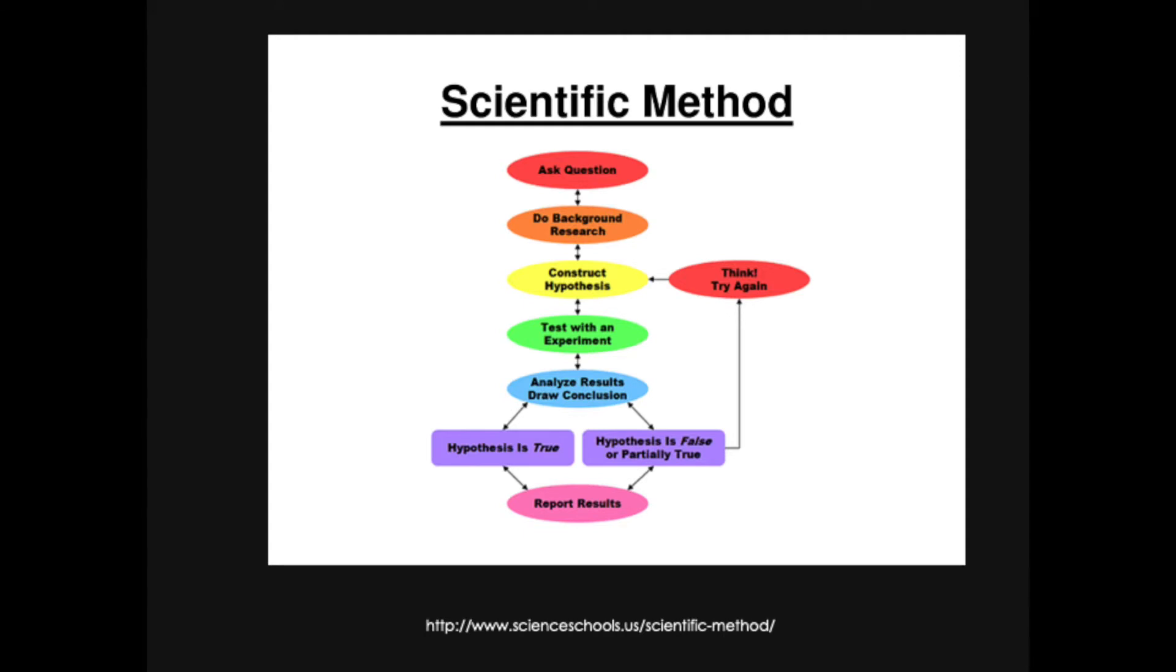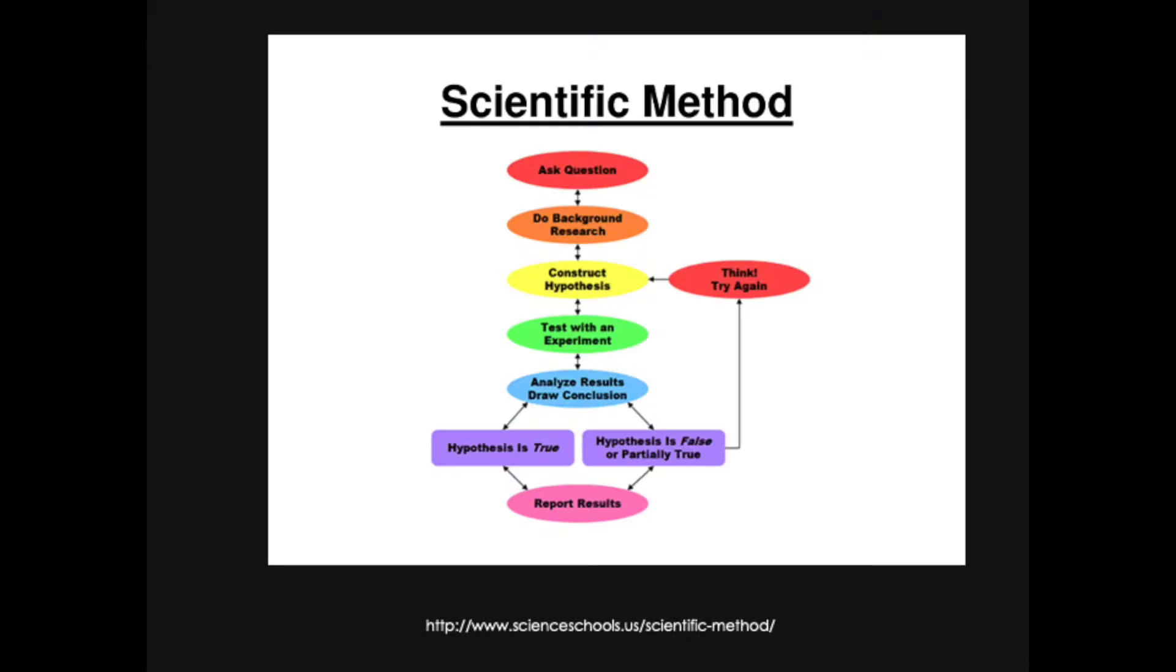So at this point I would like to step back a little bit and just think about what we're doing in science. In science we follow the scientific method, and you can see in this figure which I've pulled from this ScienceSchools.us website a very simplified version of the scientific method. Now this figure was meant to educate children, and you probably saw a very similar figure when you were a child first learning about science. And so this is how the method goes. First you ask a question, then you do some background research, construct a hypothesis, you test the hypothesis by carrying out an experiment, then you analyze the results and draw a conclusion.